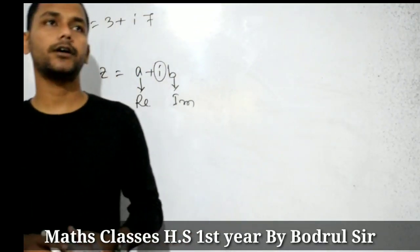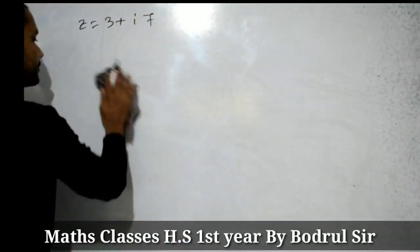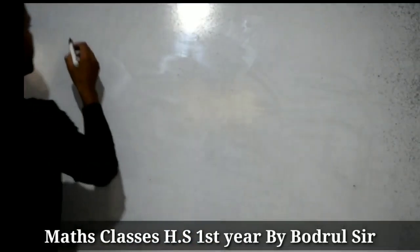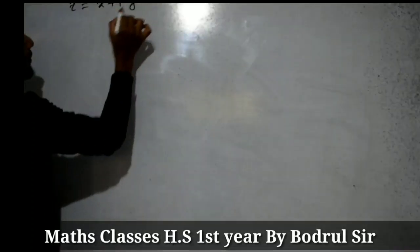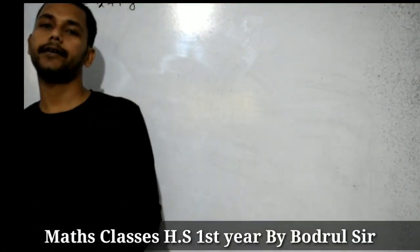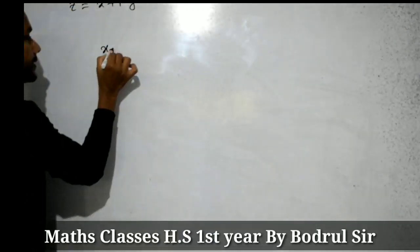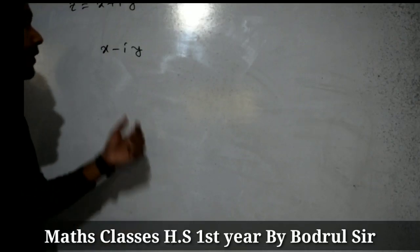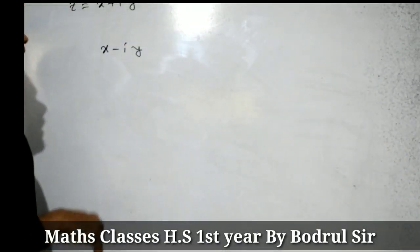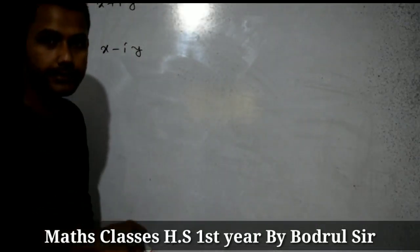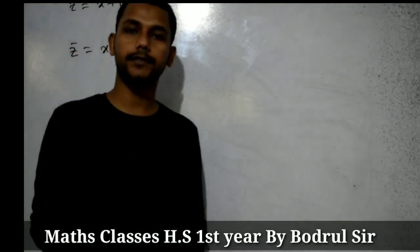Students, let us know about conjugates of a complex number. Suppose Z is a complex number and the number is x plus iy. If a complex number Z equals x plus iy, then the conjugate of this number is x minus iy, and vice versa. If x minus iy is a complex number, then the conjugate of this number should be x plus iy. Symbolically, the conjugate of a complex number is denoted by Z bar.